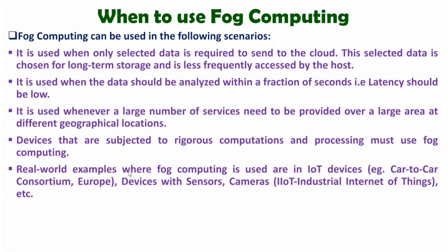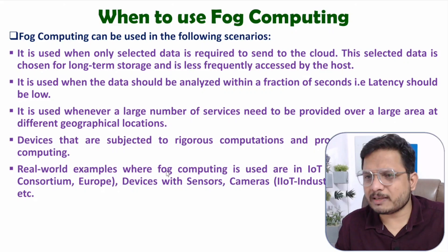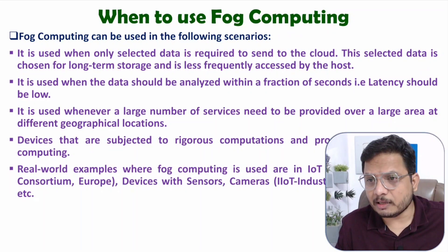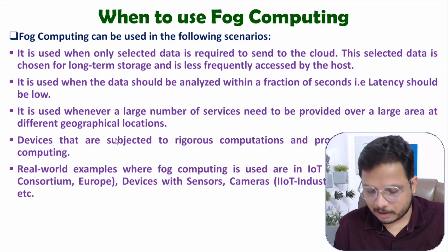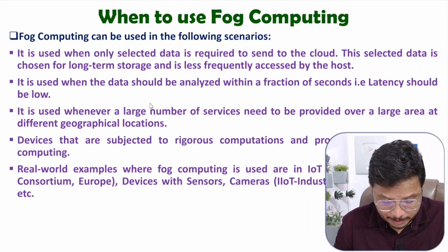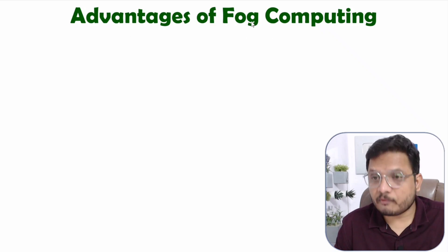Real-world examples where fog computing is used include IoT devices like car-to-car communication consortiums in Europe, and devices with sensors and cameras for IoT and Industrial Internet of Things. For lower latency requirements or real-time applications, fog computing should be used instead of cloud computing.